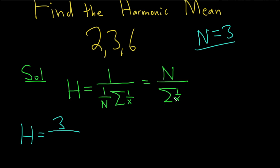and now here we add up the reciprocals of the data. So the reciprocal of 2 is 1 over 2, and then the reciprocal of 3 is 1 over 3, and the reciprocal of 6 is 1 over 6.